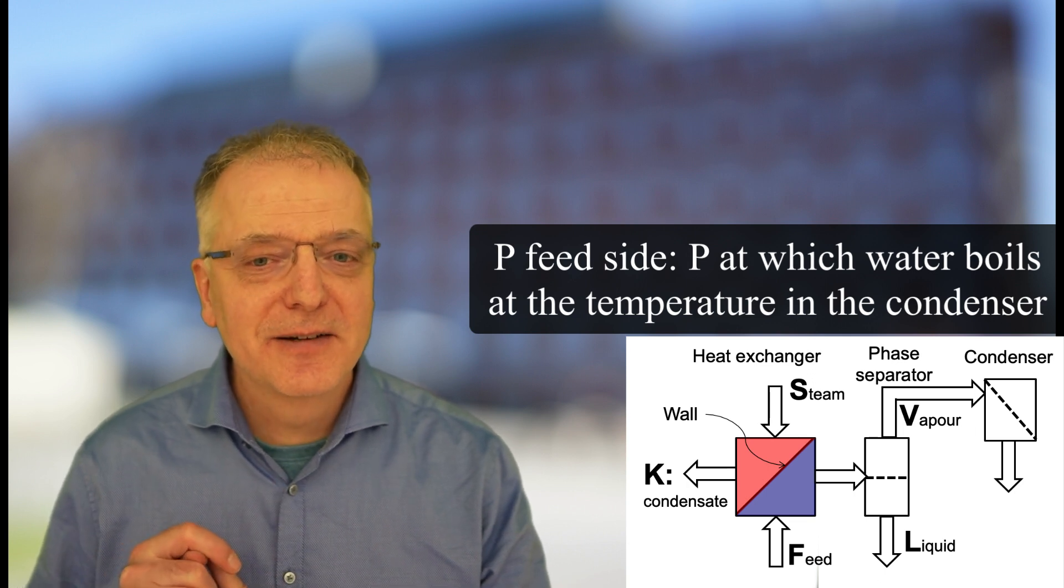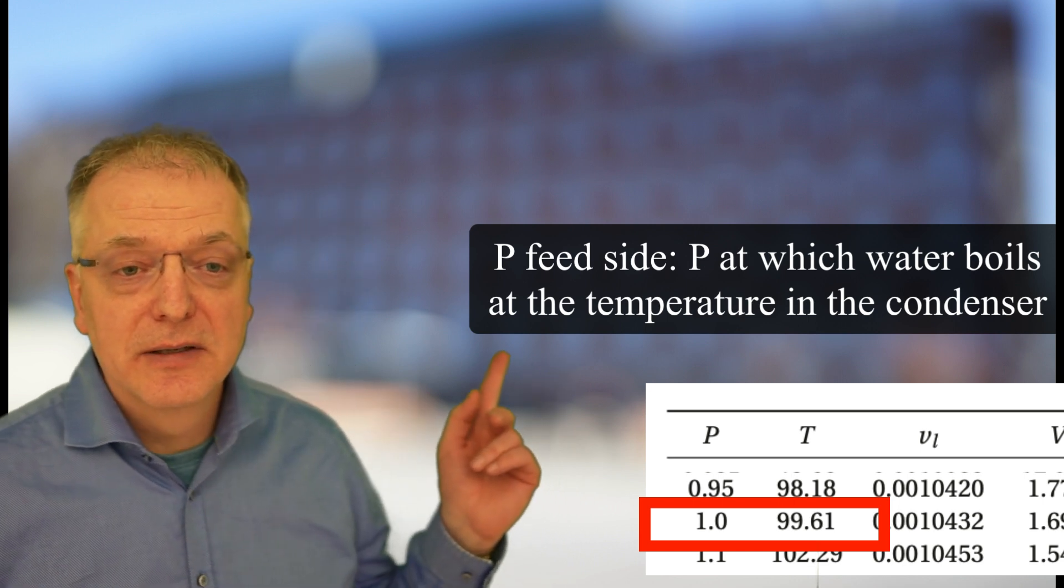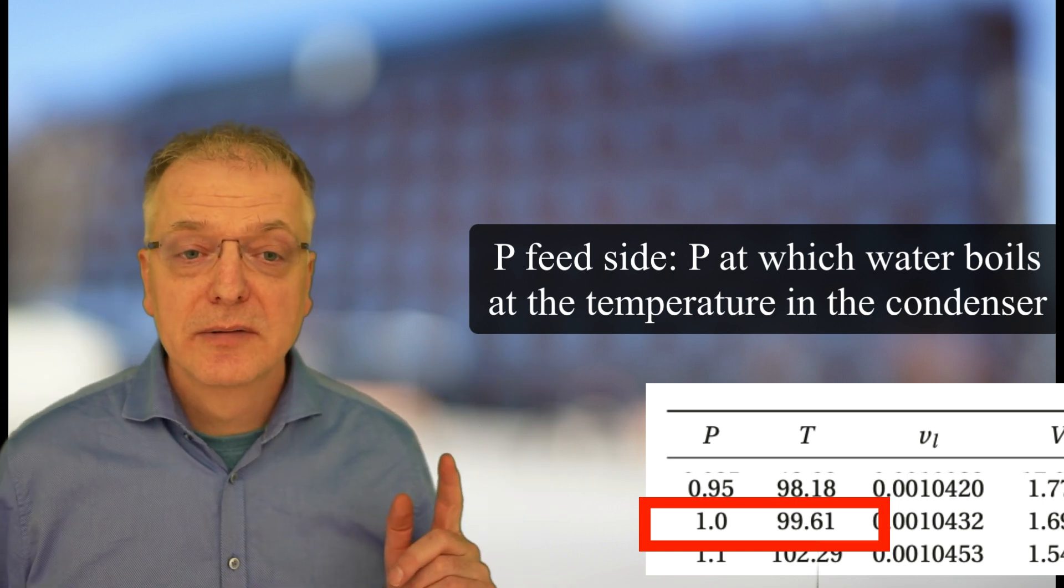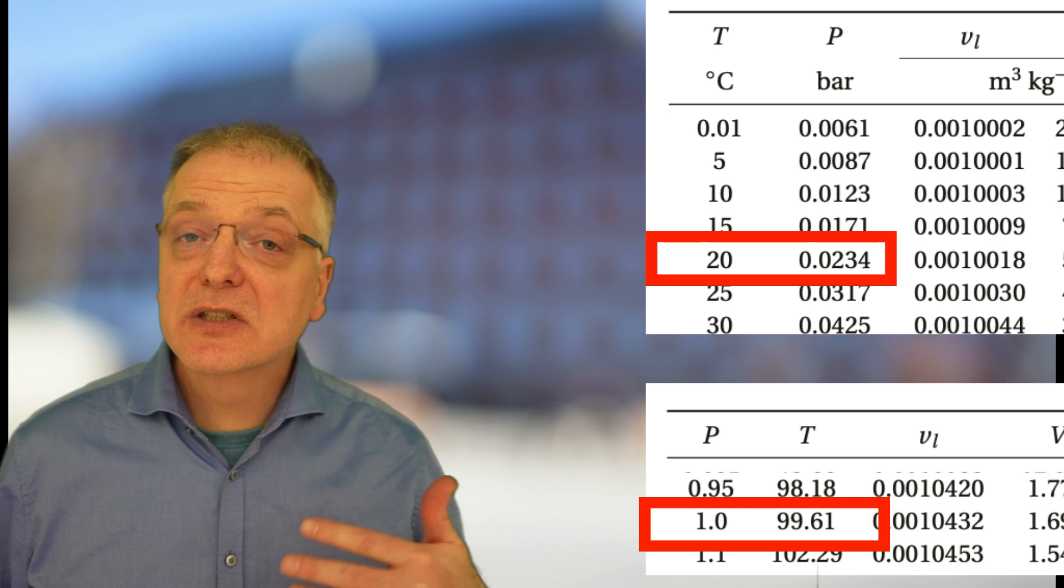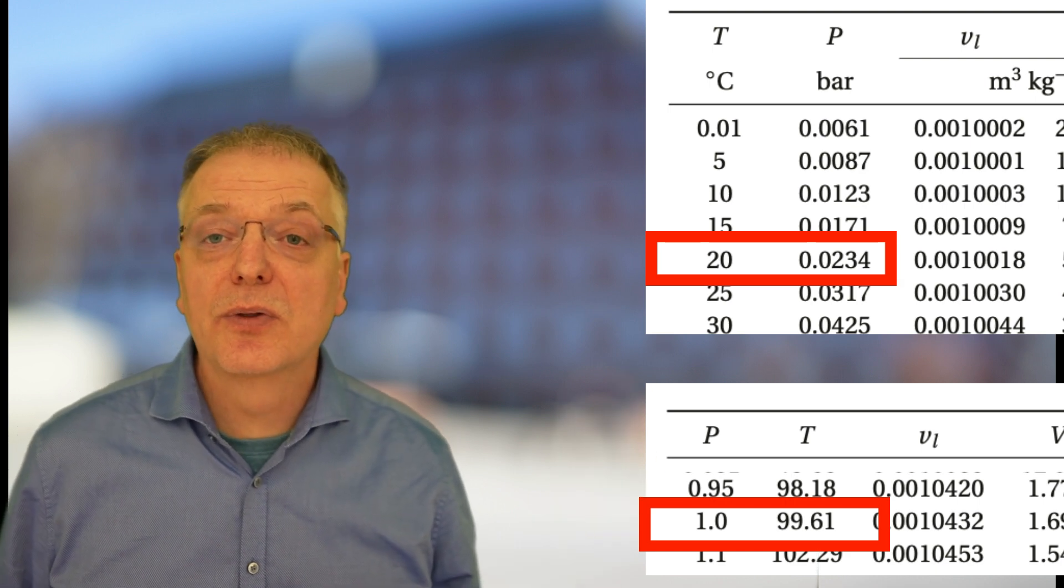What did I say there? Well, if the condenser temperature is 99.61 degrees, the pressure is 1 bar. If the condenser temperature is 20 degrees, then the pressure is 0.0234 bar.